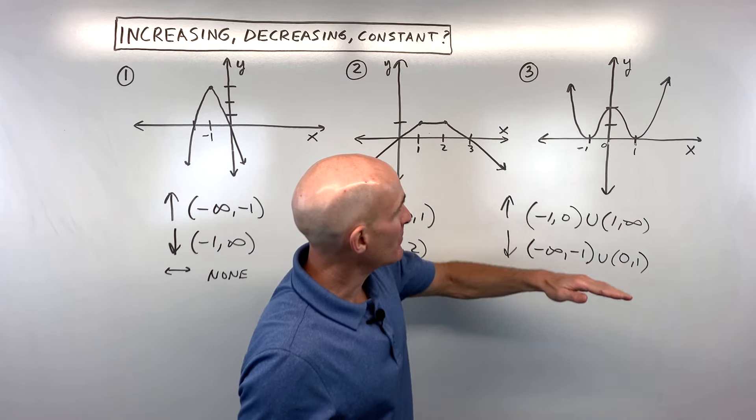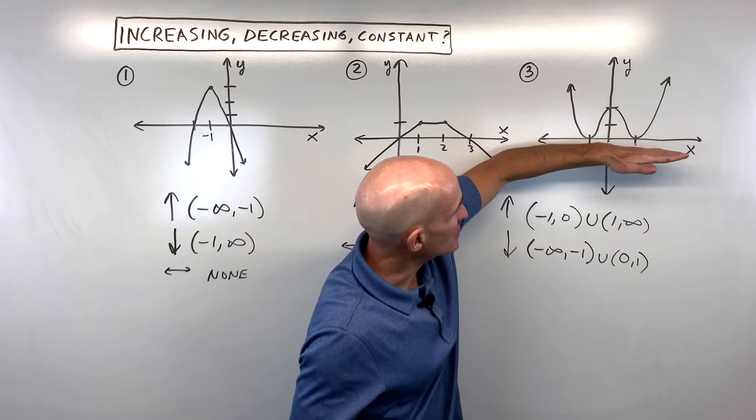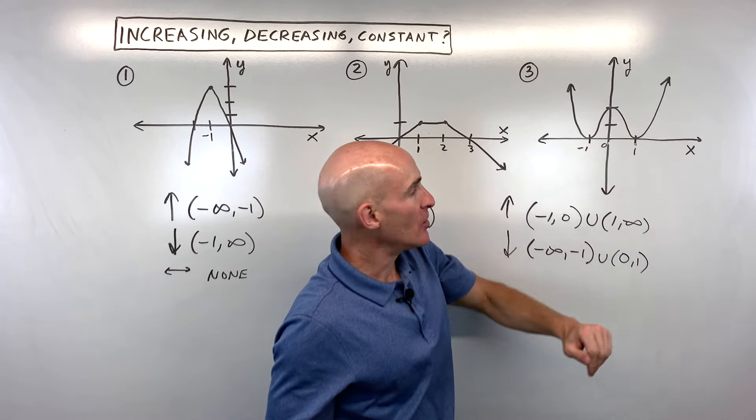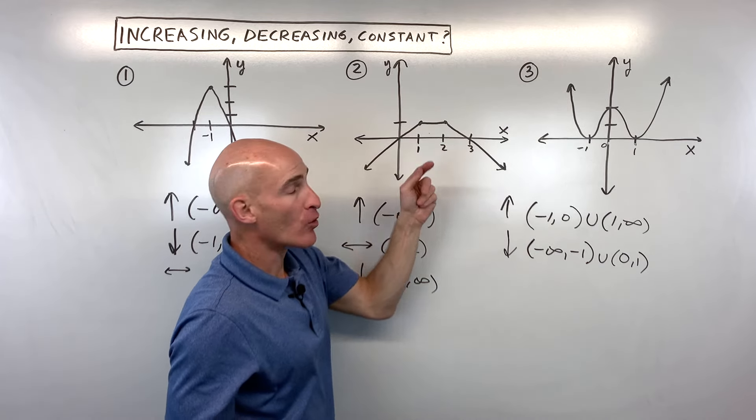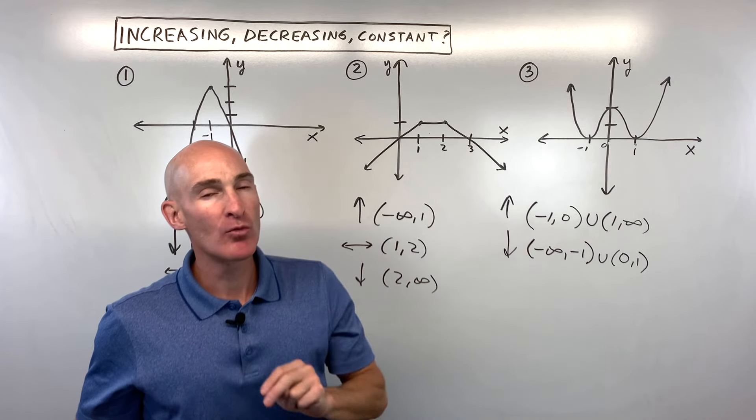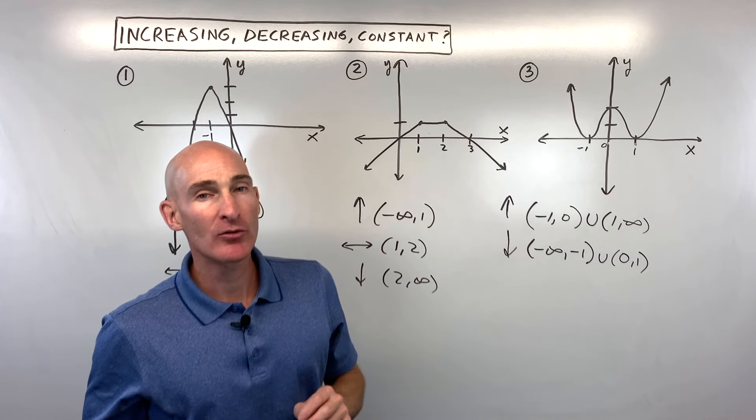Is there any place on this graph where it's horizontal or constant? No — that would look something like a horizontal line. So let's do two more examples together.